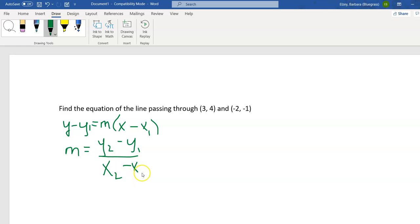Now it doesn't matter which point I choose to be my x1, y1, and which point I choose to be my x2, y2. I'm going to choose 4 to be my y2, so I'll have 4 minus negative 1. Since I chose 4 first on top, I have to choose the corresponding x value first on the bottom, so 3 minus negative 2.